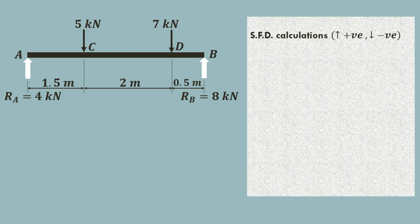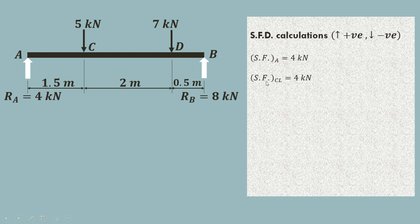Now we start the shear force diagram calculations. The convention used is upward forces are positive and downward forces are negative. Shear force at point A equals reaction RA acting upward, so it is positive: shear force at A is 4 kN. Since there is no other force between A and just left of C, the shear force remains the same — just left of C it is also 4 kN.